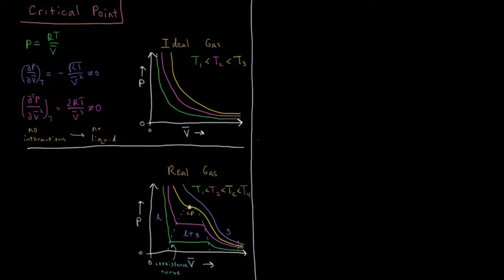What's going on here? Starting out at very high molar volumes as a gas, at these low temperatures the gas compresses into liquid and the pressure isn't going up because any decrease in molar volume is just converting more of the gas to liquid. Eventually you compress it so much that all of the gas is now liquid, and you're trying to compress pure liquid — which is rather incompressible — so there's a very large increase in pressure. At a higher temperature, it takes more pressure to force it to become liquid, and then the liquid phase appears over a shorter volume range.